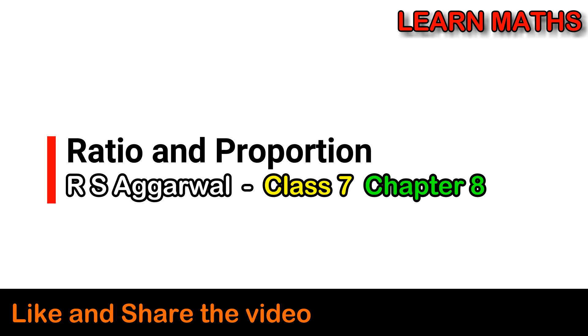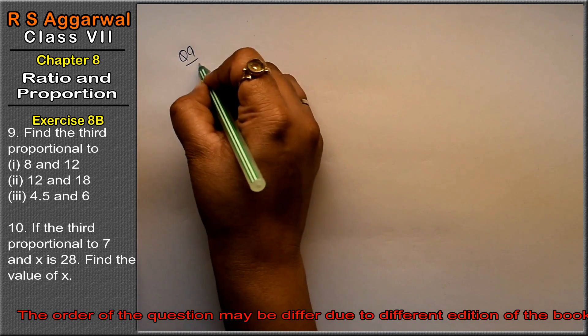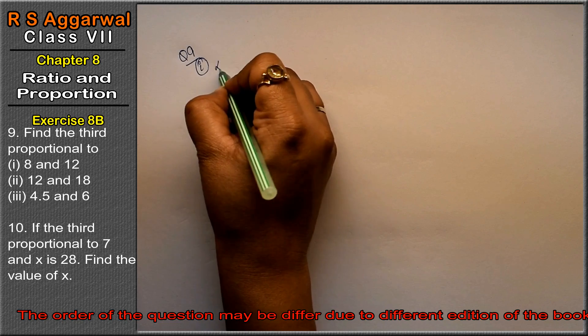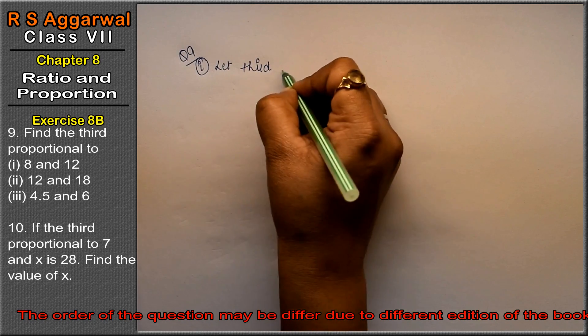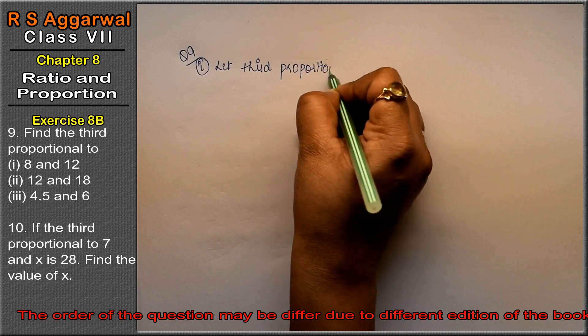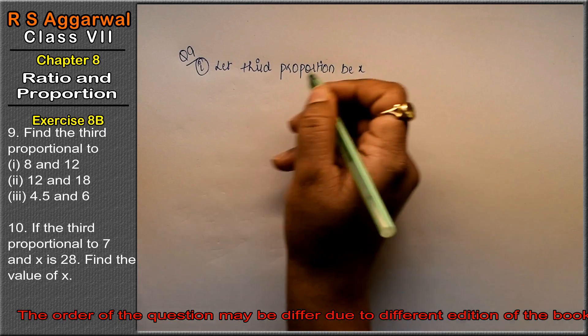Let's do question number 9 of exercise 8B, ratio and proportion. Question number 9 is find the third proportional to... We have to find the third proportion in the first part. Let third proportional be x. So what do we do in this case?